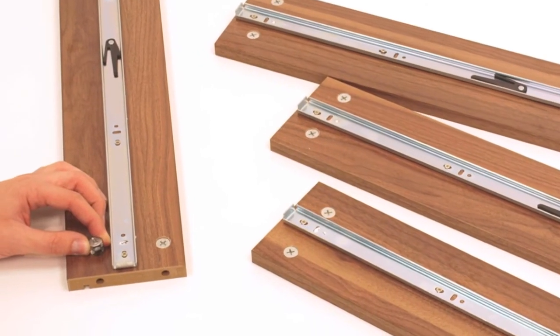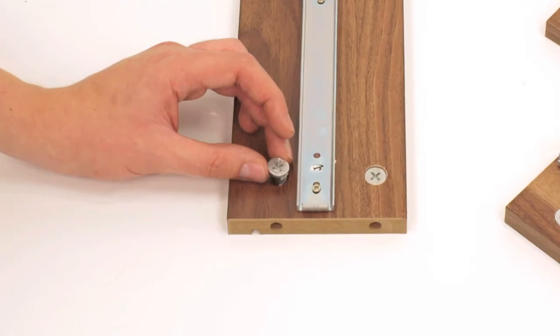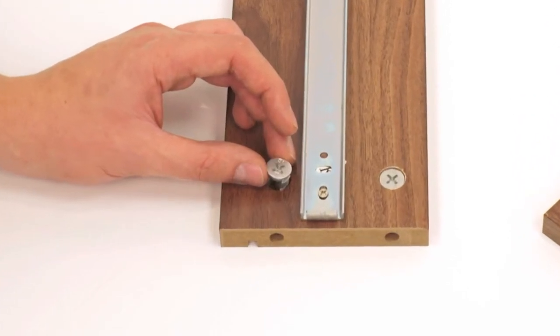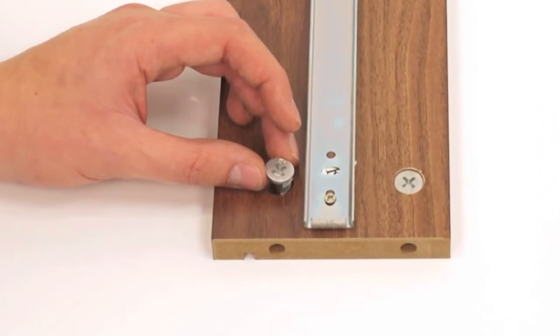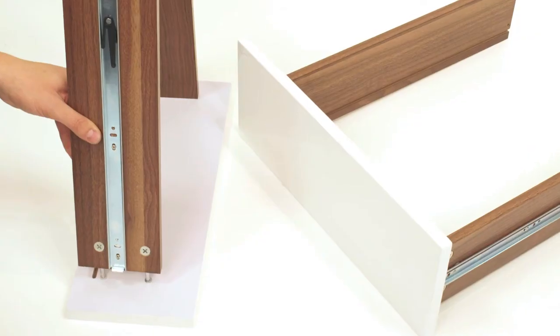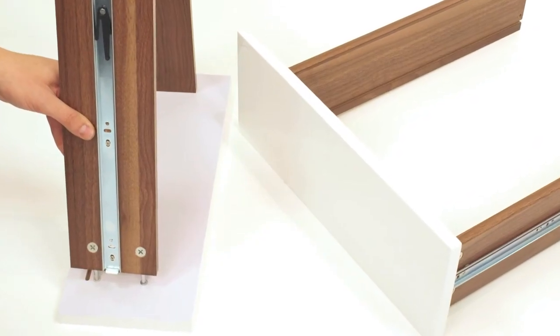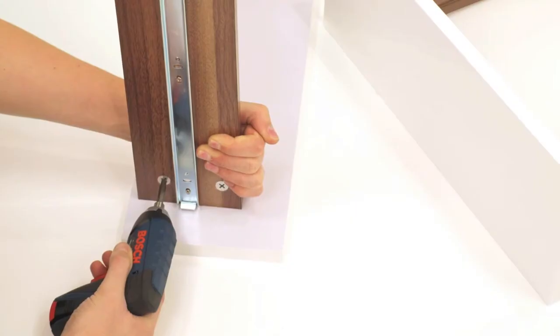Now, push all the cam fixings into the large holes on the drawer sides, ensuring the small arrow is pointing to the outer hole as shown. Push the drawer fronts onto the side panels and tighten all the cams.